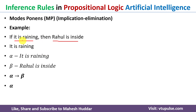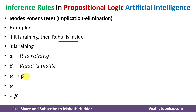If we look carefully: 'If it is raining, then Rahul is inside' — and it is already raining — the conclusion is that Rahul is inside, which is beta. So in Modus Ponens, whenever we have alpha implies beta and alpha, the result will always be beta.